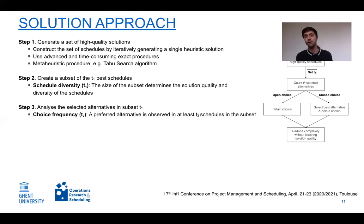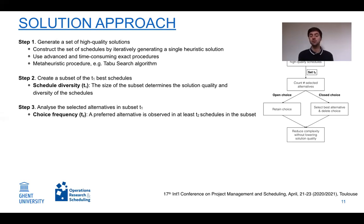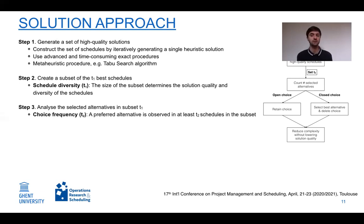In the next step, we analyze which alternatives are selected for each work package across all solutions in the subset. This requires a second criterion called the choice frequency, or T2. An alternative is only considered preferred when it appears in at least a certain proportion of schedules in the subset — specifically, when its frequency exceeds a threshold T2.